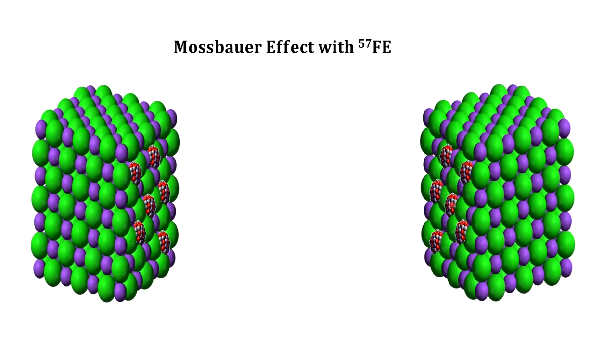What Mossbauer discovered was that if he embeds the iron atoms in a crystal, the recoil is reduced dramatically, and absorption can be re-established.